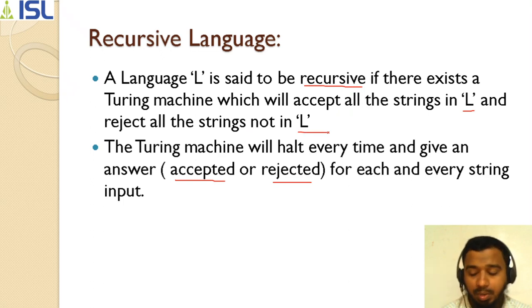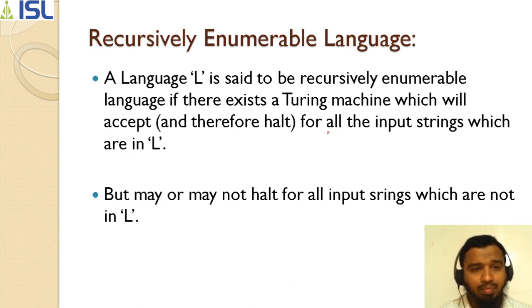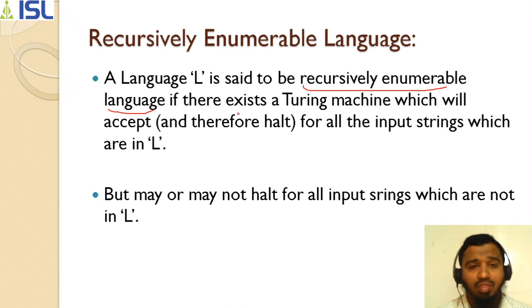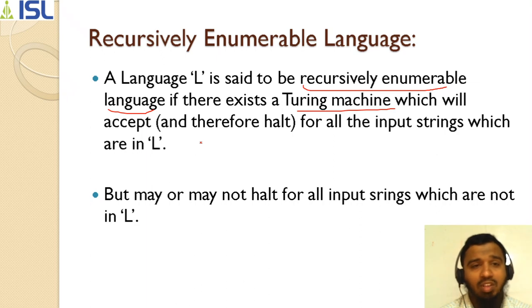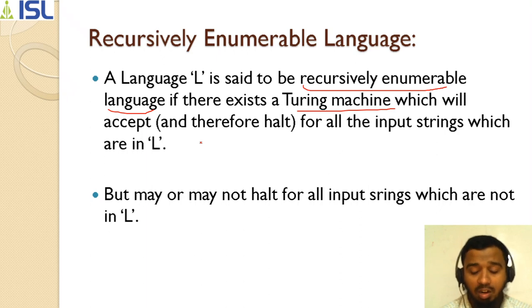The next is recursively enumerable language. A language L is said to be recursively enumerable if there exists a Turing machine which will accept and therefore halt for all the input strings which are in L. But it may or may not halt for all input strings which are not in L. The difference between recursive and recursively enumerable language is: recursive language accepts all strings in L and rejects all strings not in L, and every time it halts giving either accept or reject.